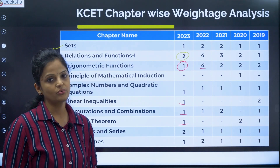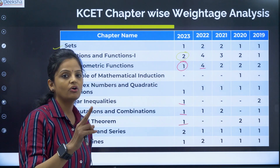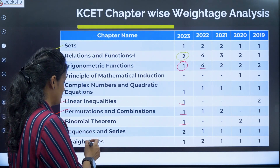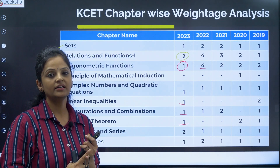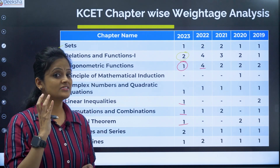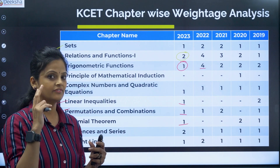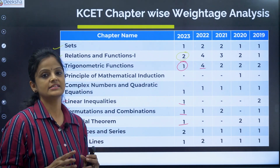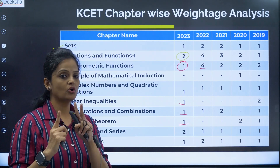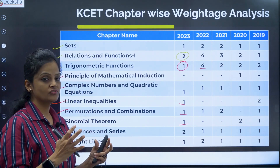Binomial Theorem depends on Permutation and Combination — it is the continuity of that chapter. We can expect one question from it. Consistently it has only one or two questions, and in that, middle term, general term, and coefficients are the areas to stress on. Next chapter is Sequence and Series — a large but very easy chapter. On average, two questions, covering the two concepts AP and GP.